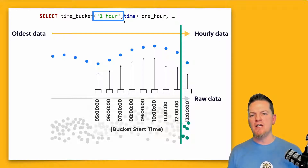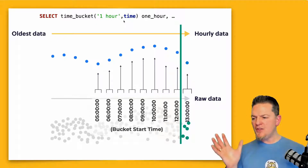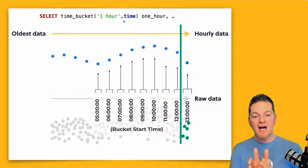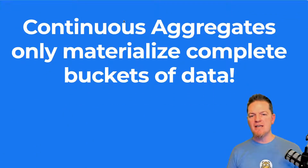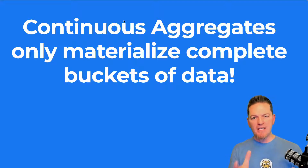Through the rest of this video, you'll also hear us talk about bucket width — that just means whatever interval you have inside the time bucket function. Whether I say a bucket of one hour or a bucket width of an hour, that's what we're talking about. The key thing we saw last week is that even if I'm in the middle of an hour — say it's 1:30 in the afternoon — if I run a query on a hyper table directly, I get back a 1:00 PM bucket with some aggregation. However, continuous aggregates will only materialize a bucket width of time that has fully completed.